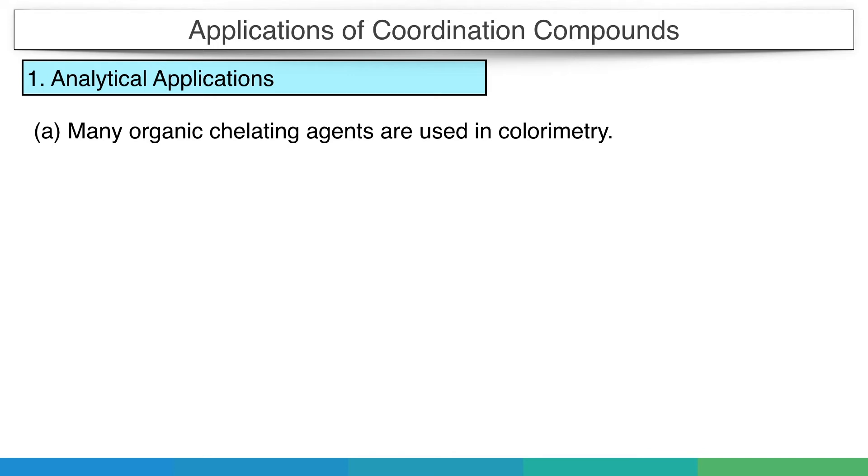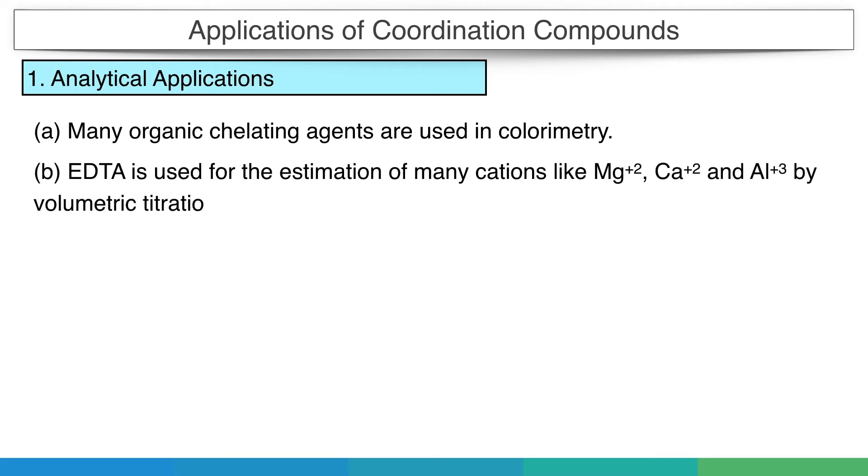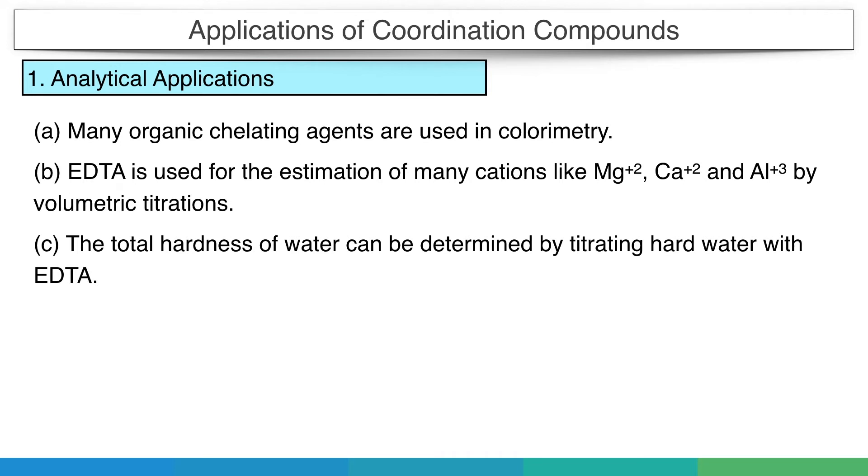EDTA is a chelating agent used for the estimation of many cations like magnesium, calcium and aluminum by volumetric titrations. The total hardness of water can be determined by titrating hard water with EDTA. As hardness in water is due to calcium and magnesium ions present in water, EDTA can form complexes with these ions and they can be easily estimated by titration.